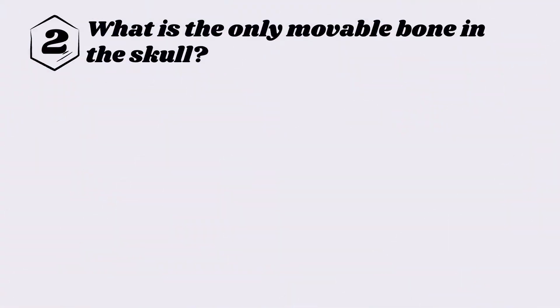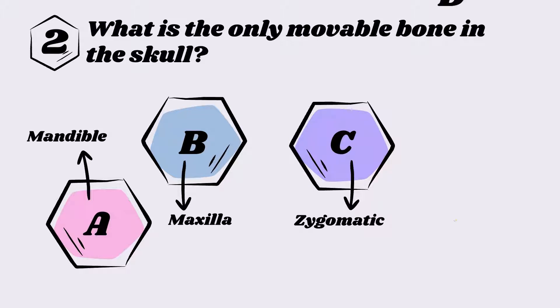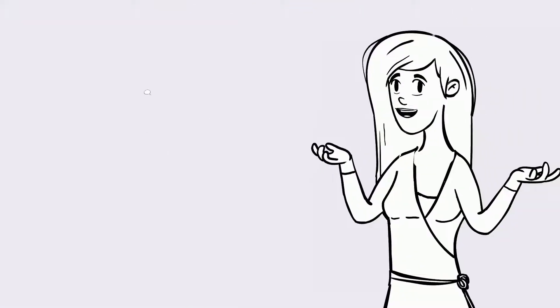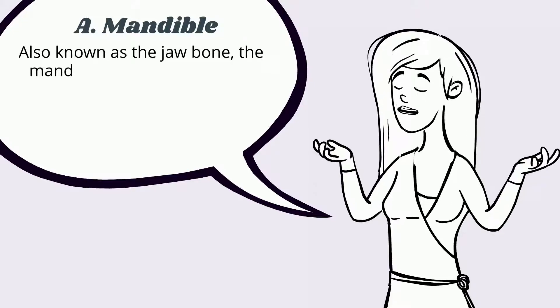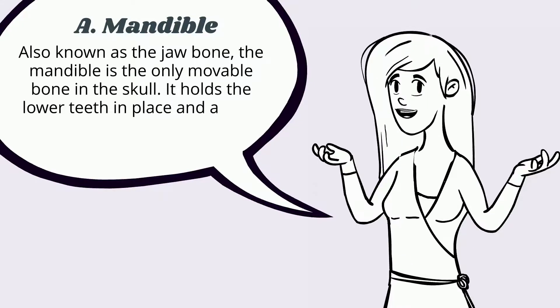Question two: What is the only movable bone in the skull? A) Mandible, B) Maxilla, C) Zygomatic, D) Humerus. The answer is A, mandible. Also known as the jawbone, the mandible is the only movable bone in the skull. It holds the lower teeth in place and assists in chewing.